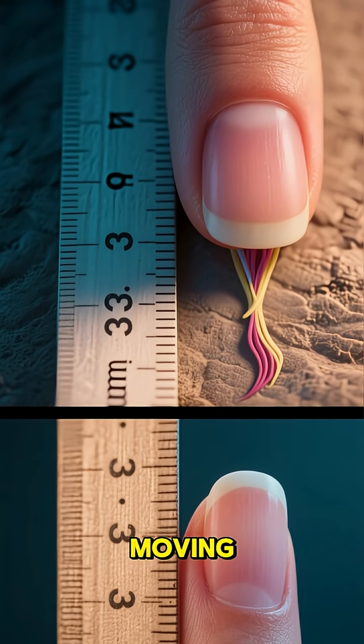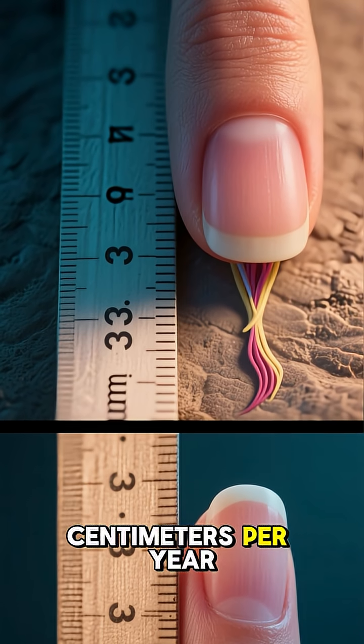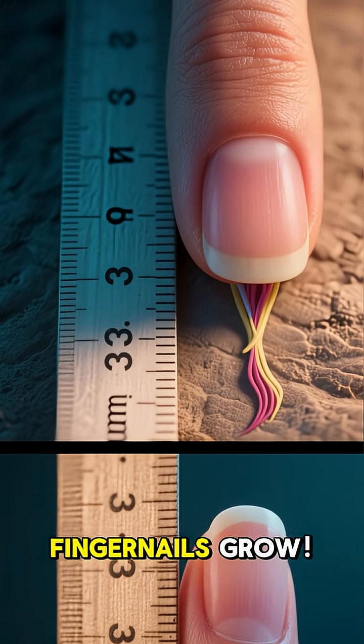This tells us the moon is moving away at about 3.8 centimeters per year. That's about the same speed your fingernails grow.